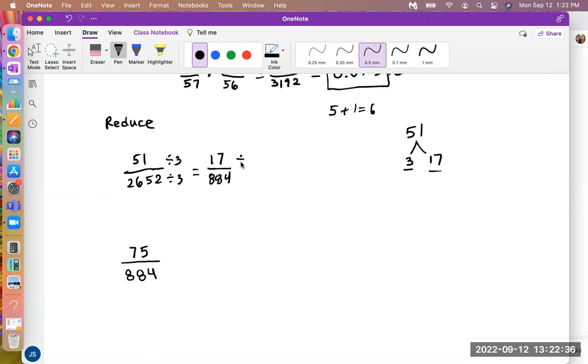So I will divide the top by 17, and the bottom by 17. 17 divided by 17 is 1, and I just found out 884 divided by 17 is 52. So that's my final answer there, 1 over 52.